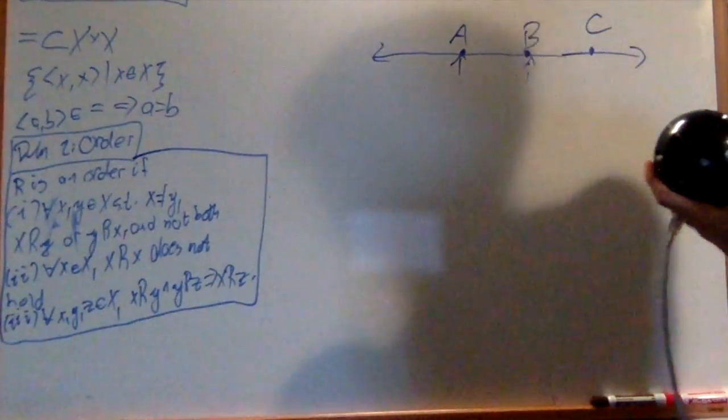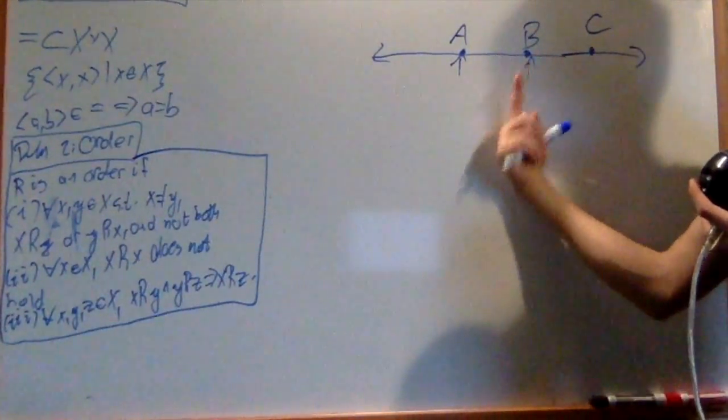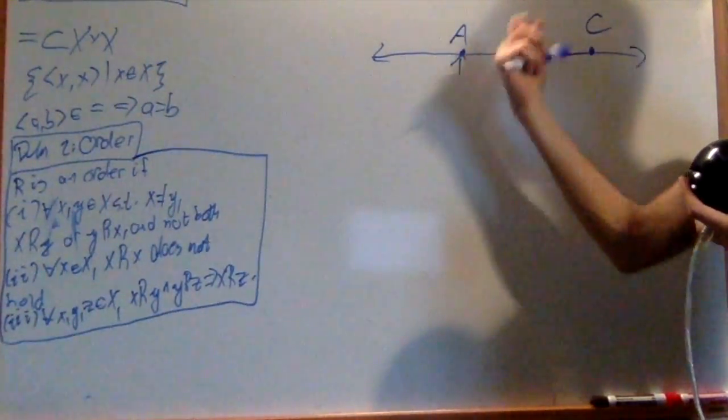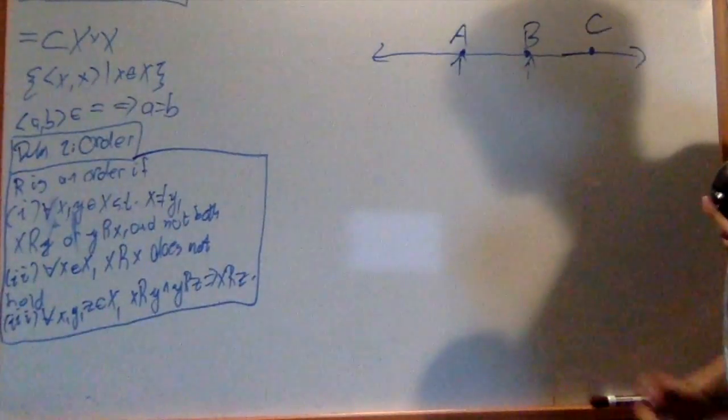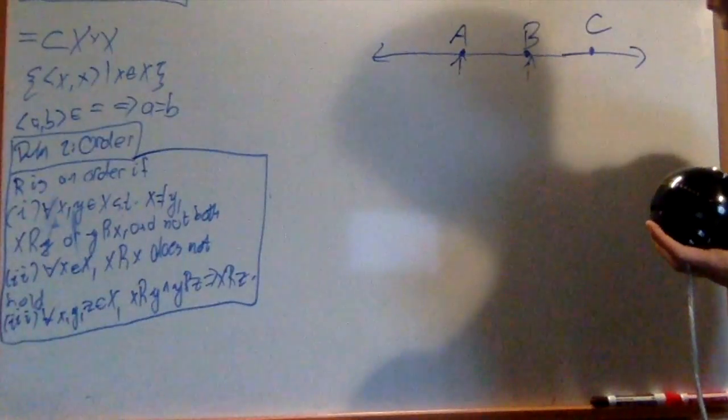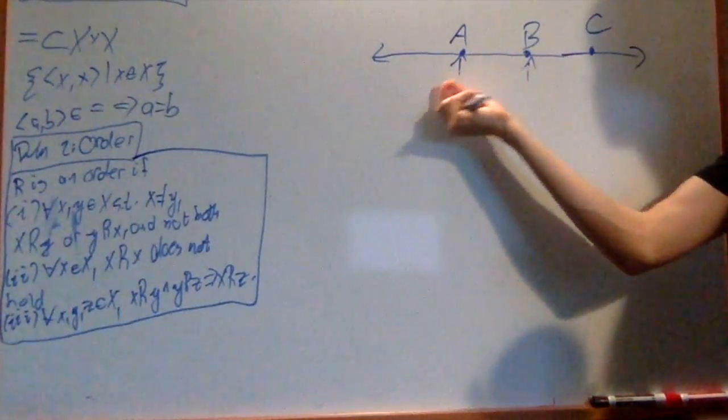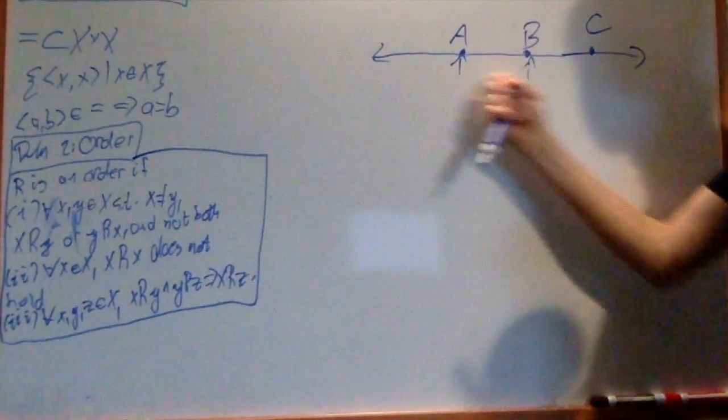So let's just go over it again. If I have two distinct points, one has to be less than the other, and it can't be the other way around. And one element of the set cannot be less than itself, which makes perfect sense. And it's transitive. If a is less than b and b is less than c, then a is less than c.